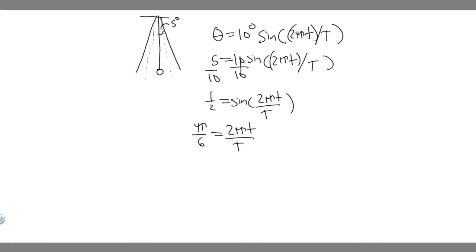So pi over 6 equals 2 pi t all over T. So what you're going to want to go ahead and do is we want to find t, we're solving for t. So if you multiply both sides by T, or we're solving for this t right here. So multiply both sides by T.